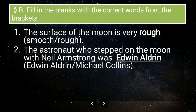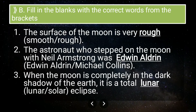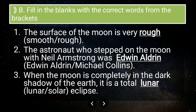Third question: when the Moon is completely in the dark shadow of the Earth, it is a total blank eclipse. The answer is lunar eclipse, because the Moon is hidden by the shadow that falls on its surface, and since it is related to the Moon, it is called a lunar eclipse.